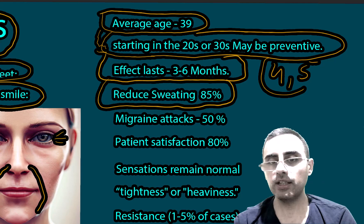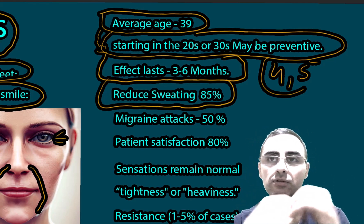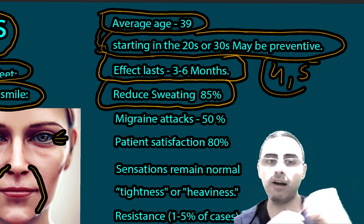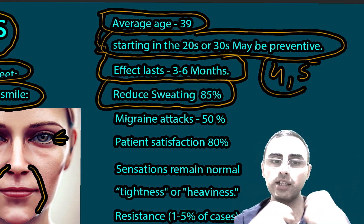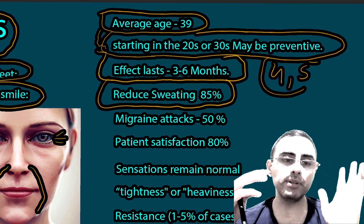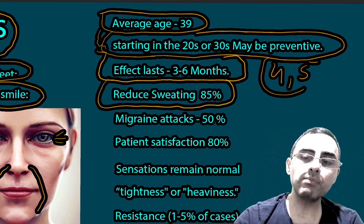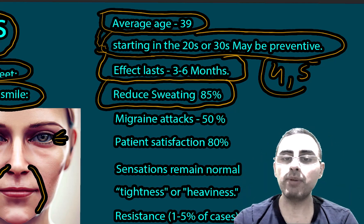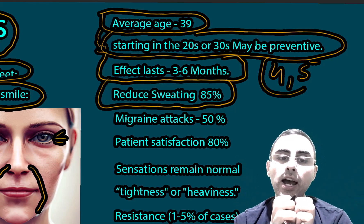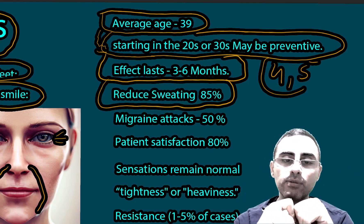Botox also reduces sweating by around 85%, which is why Botox injections are used to treat hyperhidrosis — excessive sweating. Injections are made in the armpits, hands, or soles depending on the affected area.